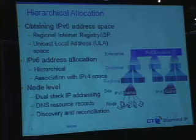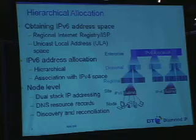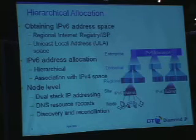Let's take a look at an allocation example. IPv6 is strictly hierarchical — the allocation must be done in this way. In some organizations, whether the address space comes from a regional internet registry, your ISP, or if you're using unicast local addressing — which is the closest thing to private addressing in IPv6, though not quite — the allocation process should follow a hierarchical manner, carving out chunks of the IPv6 address space with association to IPv4 space with respect to any transition technologies in place.